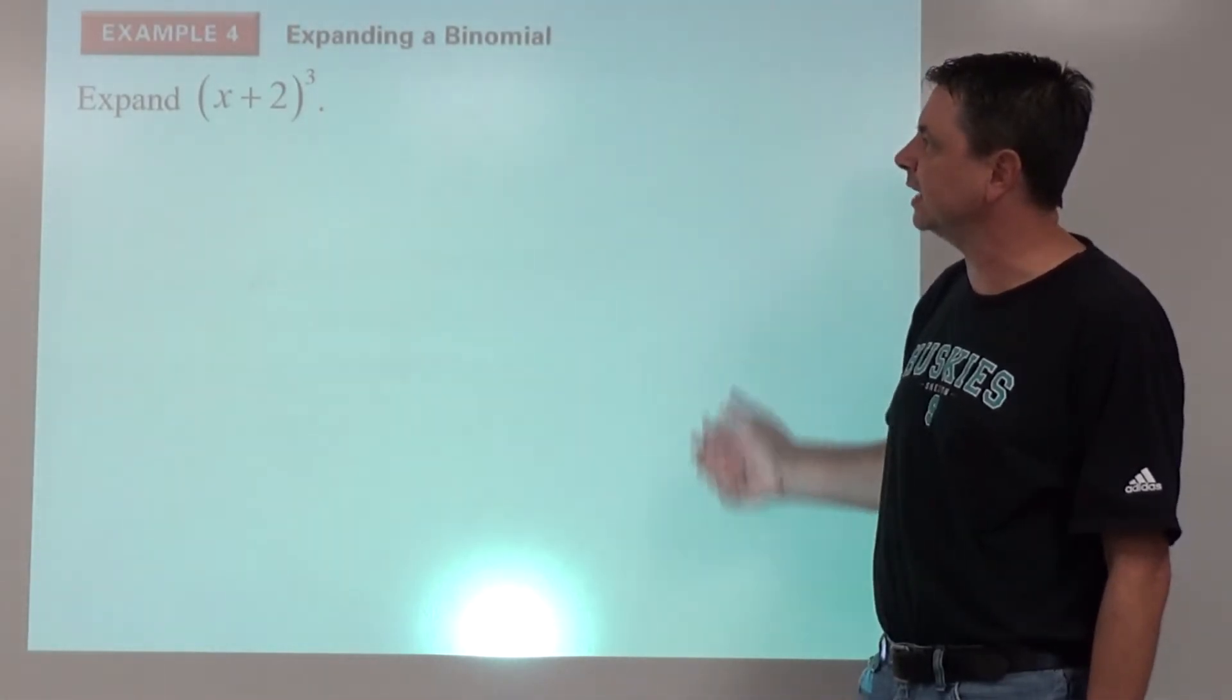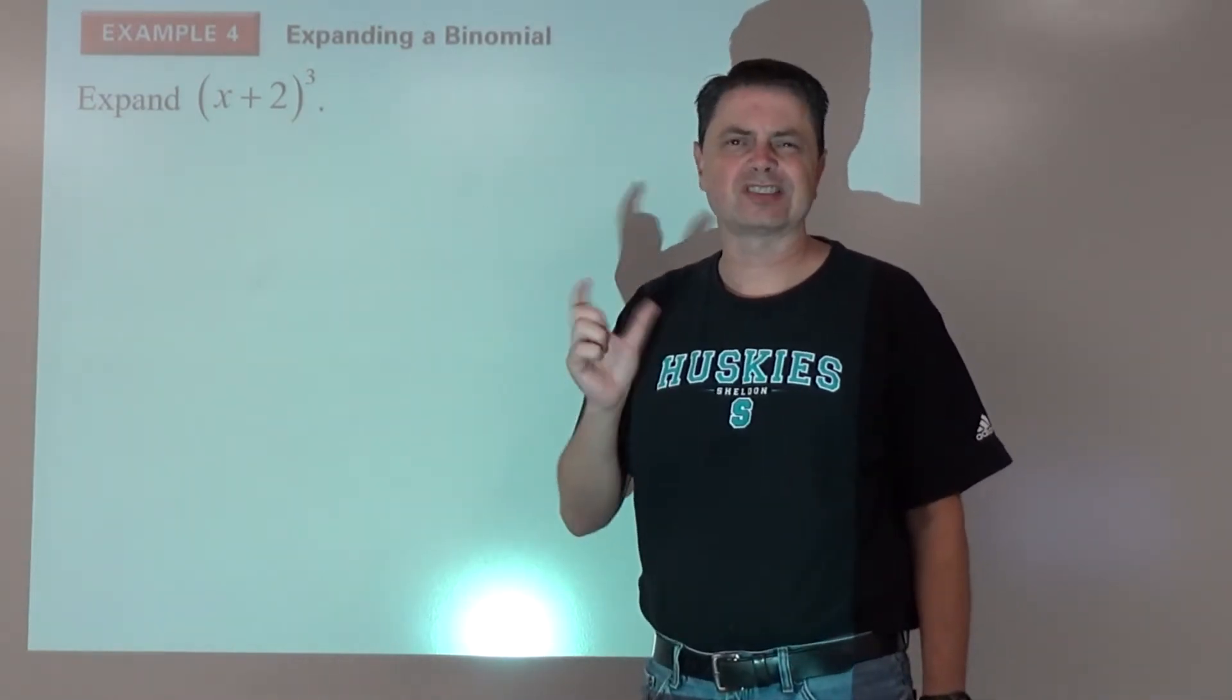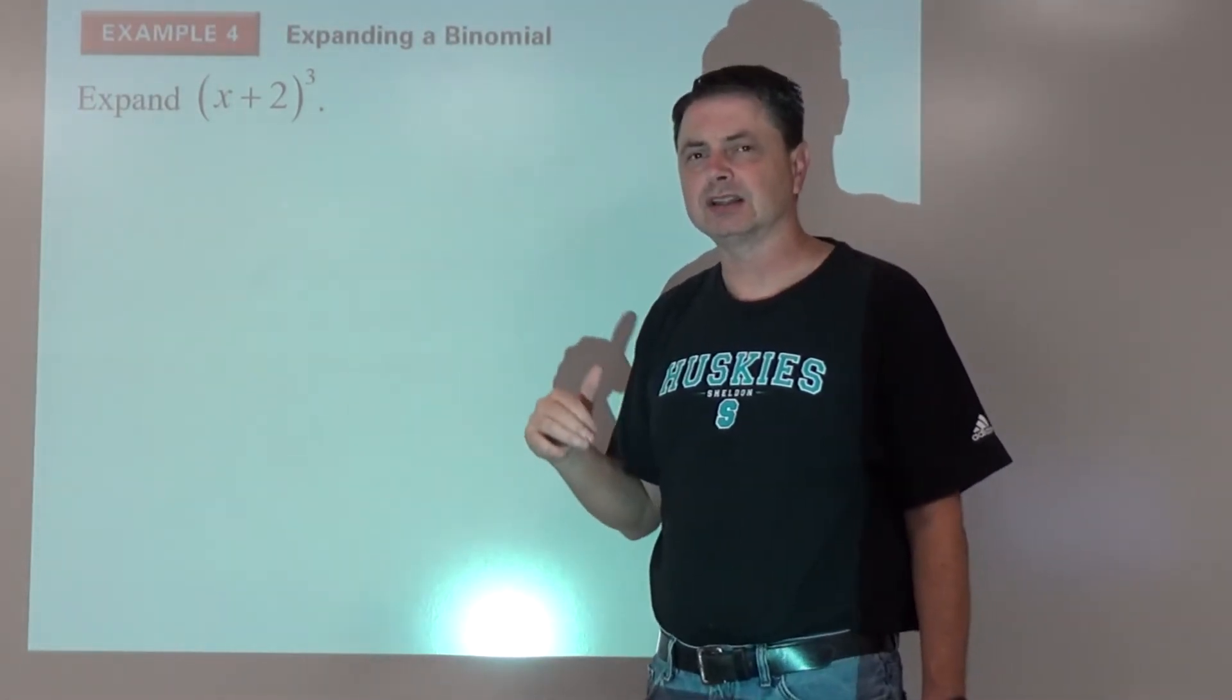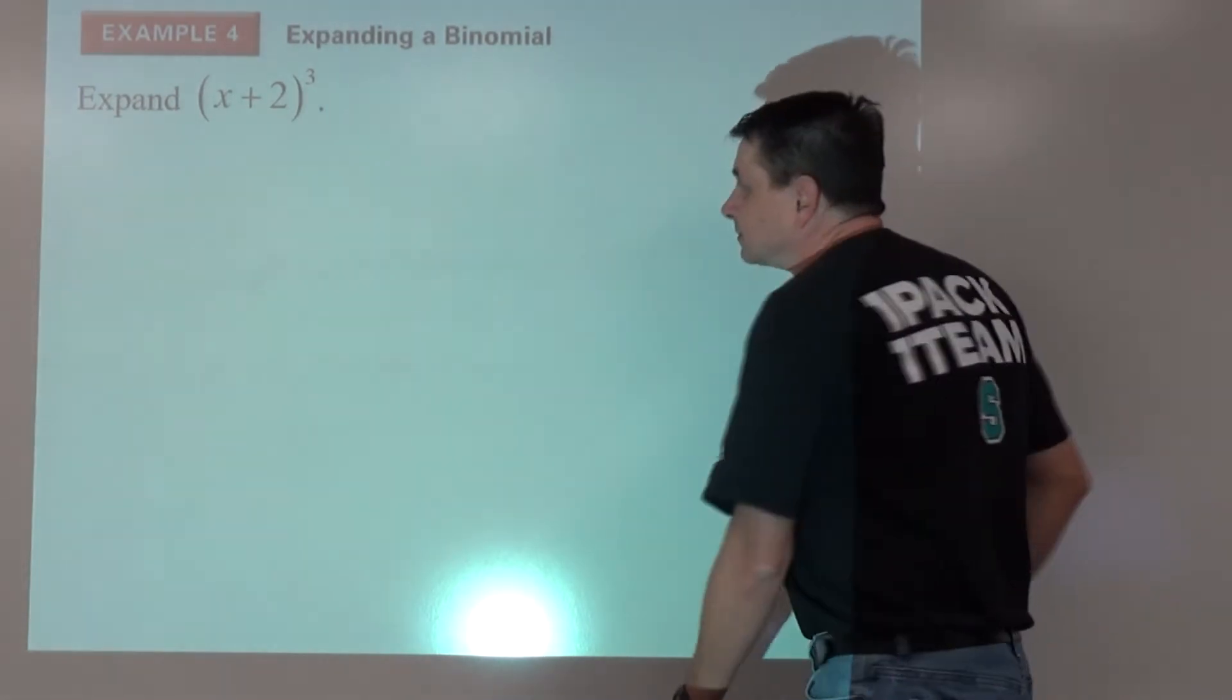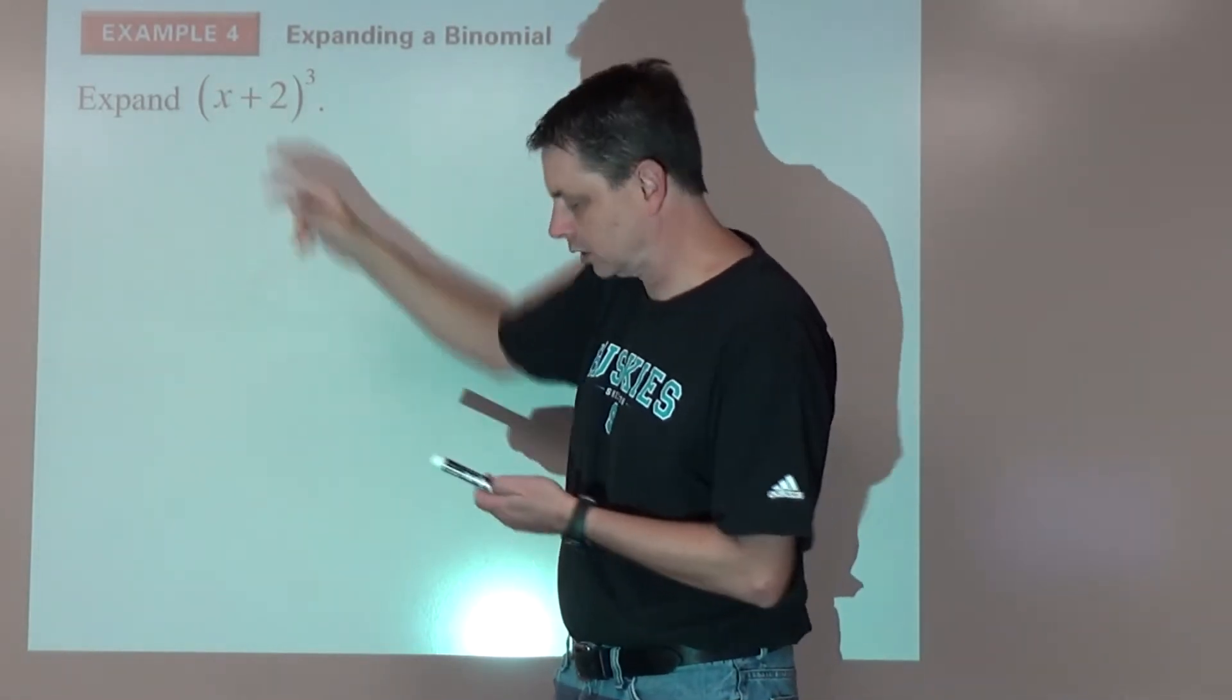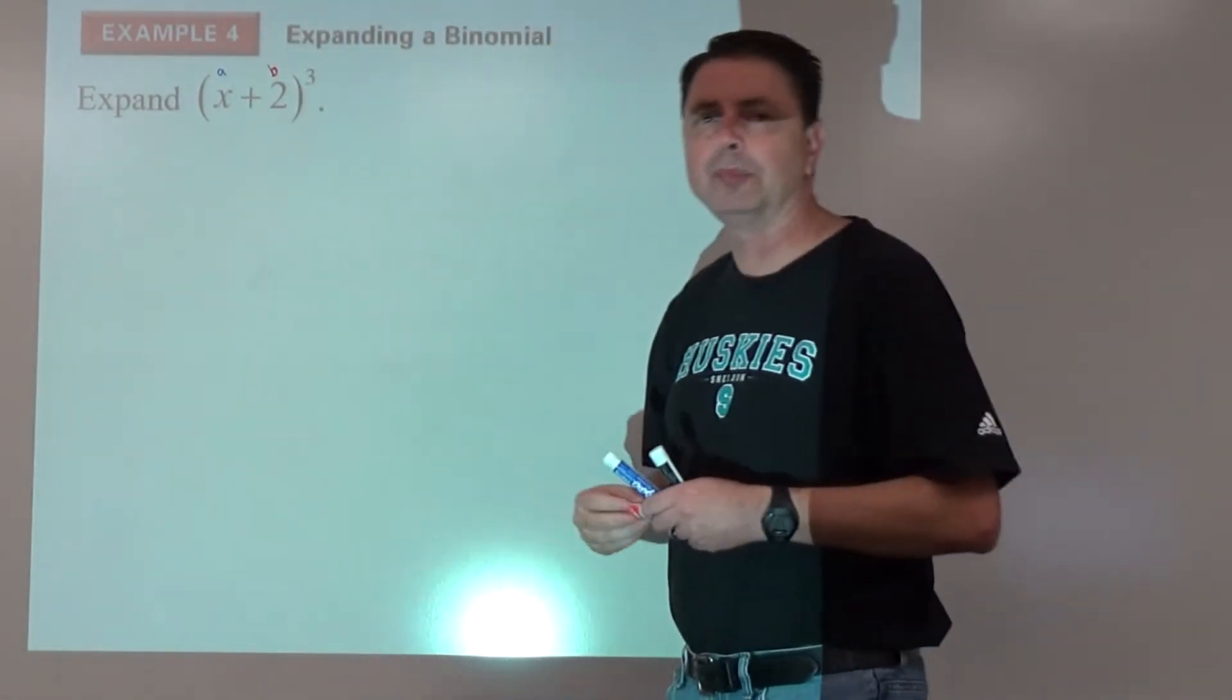Alright, example number four, expanding a binomial. Here we go. Like I said, this one, it's pretty iffy whether just doing x plus two times x plus two times x plus two is going to be faster or this is going to be faster. This is kind of the threshold for anything more than that is definitely going to be faster to go this way with our binomial theorem. But this is good practice, good introduction. And then you can see that probably going to be more accurate this way, less places to make a mistake. So each one of these, each term is going to have three parts to it. It's going to have a combination, it's going to have an x part and it's going to have a y part or an a part and a b part. So we've got a is the x.